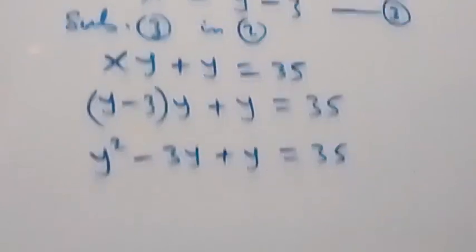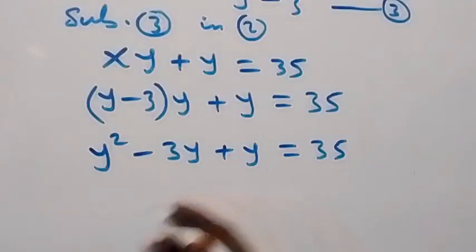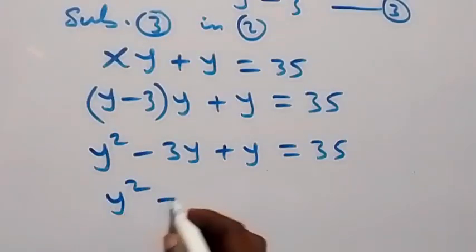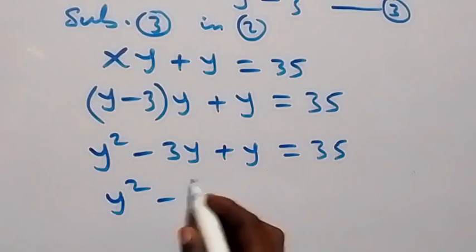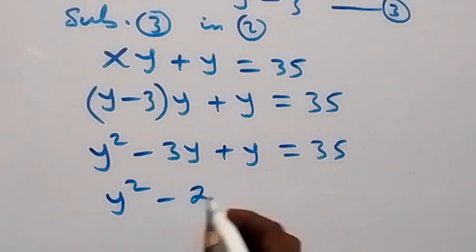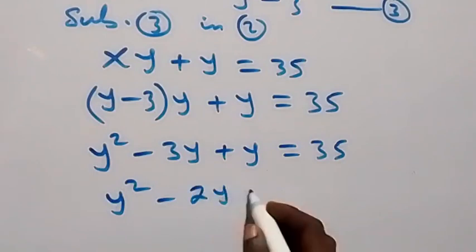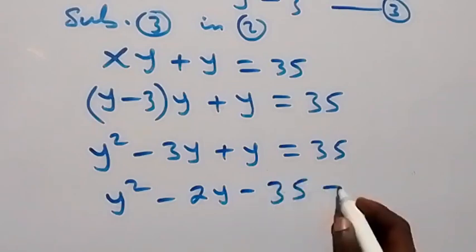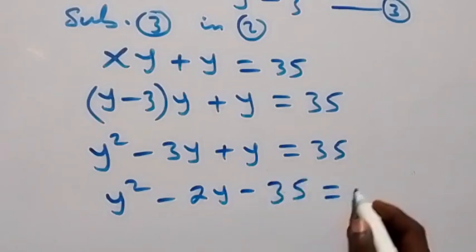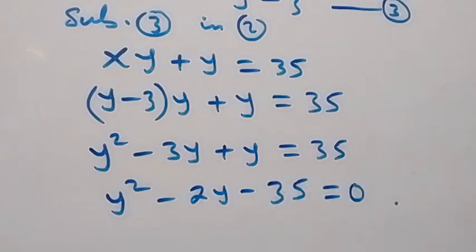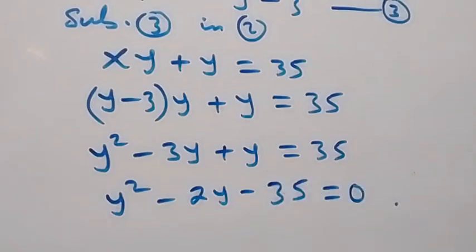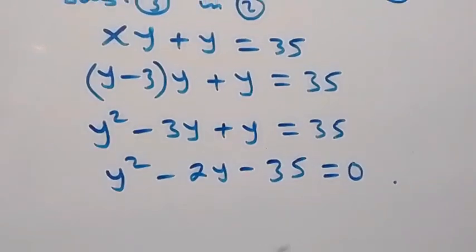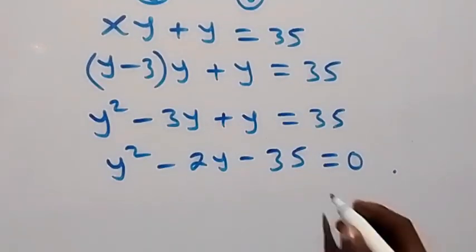Let's bring everything to one side. We have y squared minus 2y minus 35 equals to 0. Solve this quadratic equation using the factoring method.